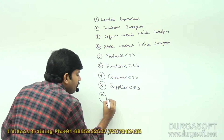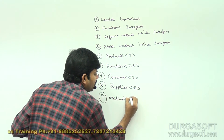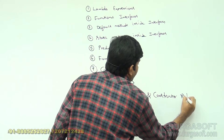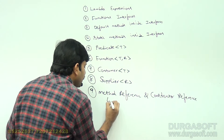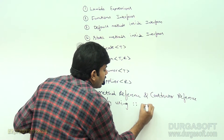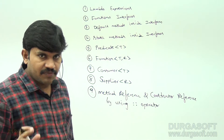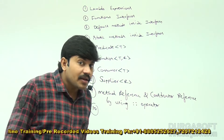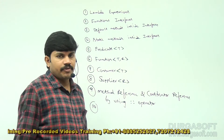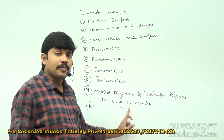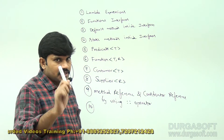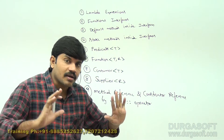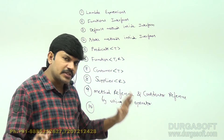After that, we covered method reference and constructor reference, using the double colon operator. This is an alternative to lambda expressions for code reusability. Note that C++ double colon operator and Java double colon operator are different — both the functionality and context of use are different.